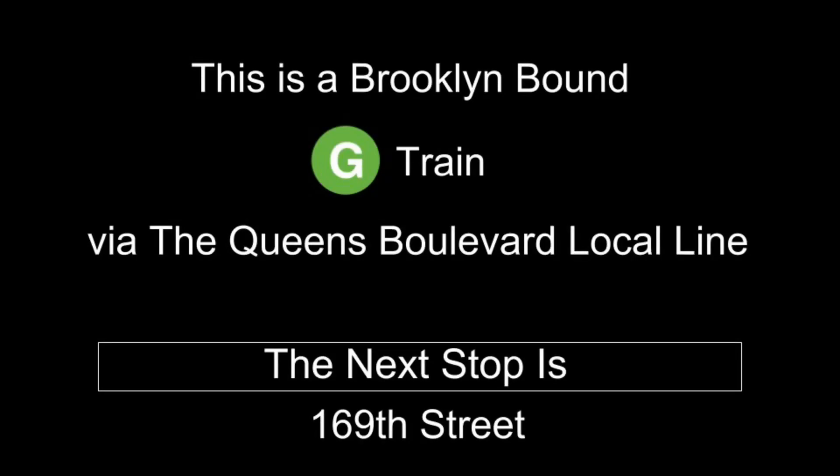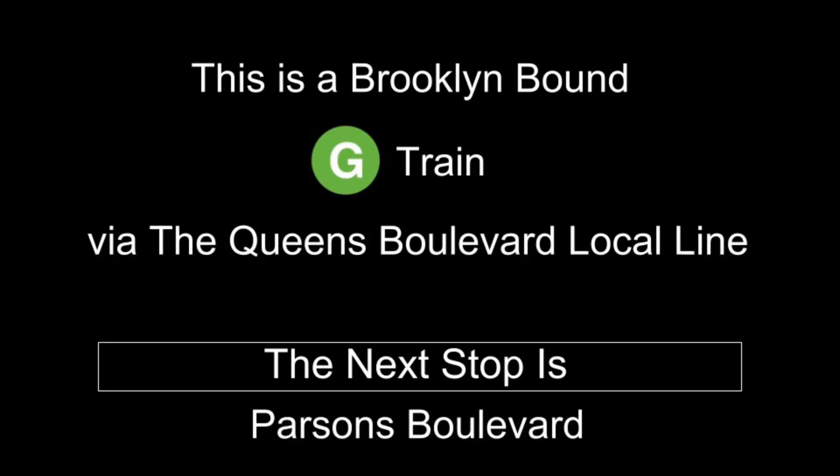This is a Brooklyn-bound G-Train via the Queens Boulevard local line. The next stop is 169th Street. This is a Brooklyn-bound G-Train via the Queens Boulevard local line. The next stop is Parsons Boulevard.